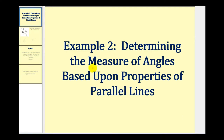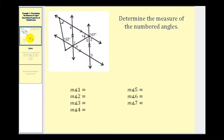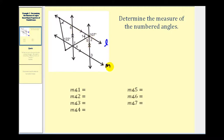Welcome to a second example of determining the measure of angles based upon the properties of parallel lines. Here we have a diagram with two sets of parallel lines as well as a couple other transversals. We want to determine the measure of angle one through the measure of angle seven. Let's label our parallel lines: line L and line M, line P and line Q.